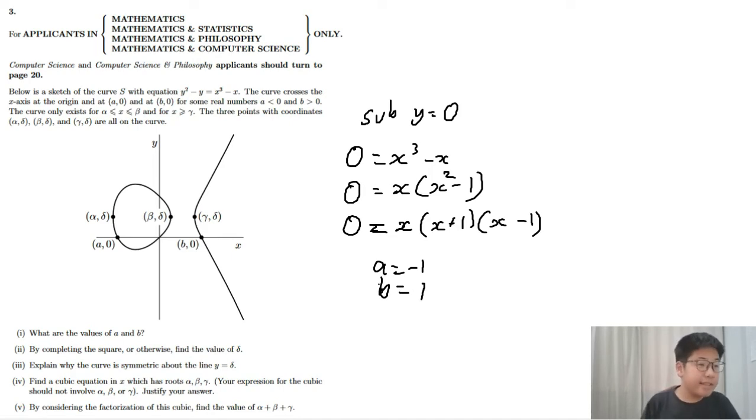By completing the square or otherwise, find the value of delta. We are now going to complete the square. What is completing the square? So say you have a square.